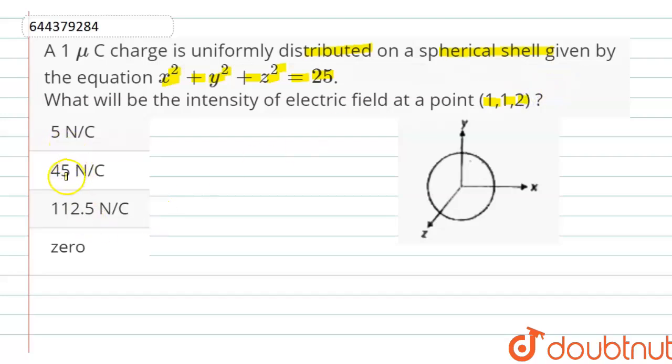Option 1: 5 newton per coulomb. Option 2: 45 newton per coulomb. Option 3: 112.5 newton per coulomb and option 4: zero.